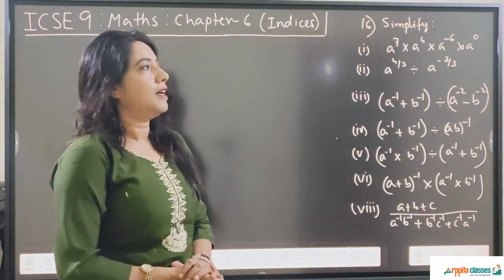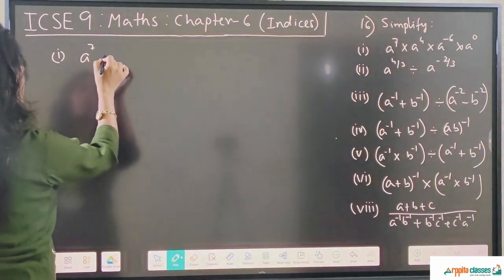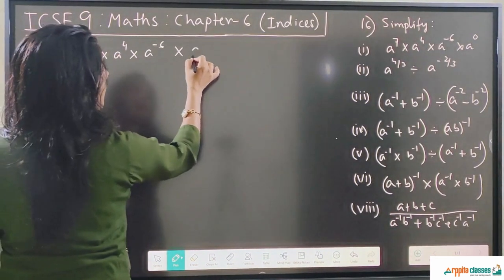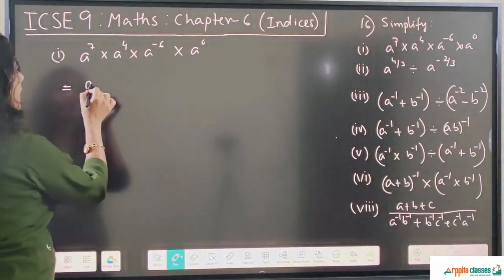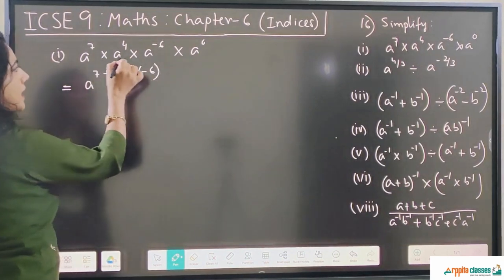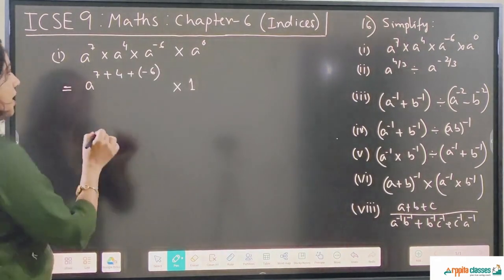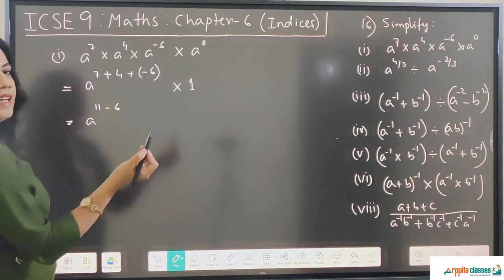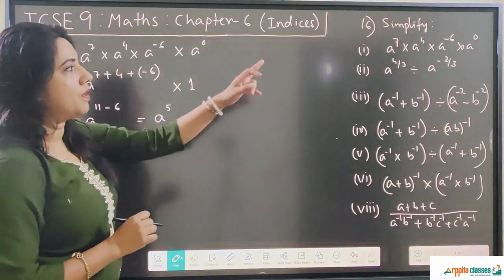Question number 16 is to simplify. The first question is a^7 · a^4 · a^(-6) · a^0. Since the bases are the same, we can add the powers. So we write a^(7 + 4 + (-6)). We know that anything to the power 0 is 1, so a^0 = 1. That gives us a^(11 - 6) · 1 = a^5. So a^5 is the answer for the first one.